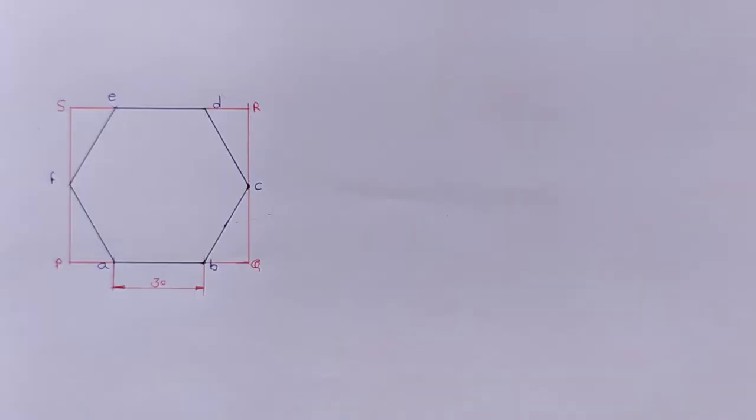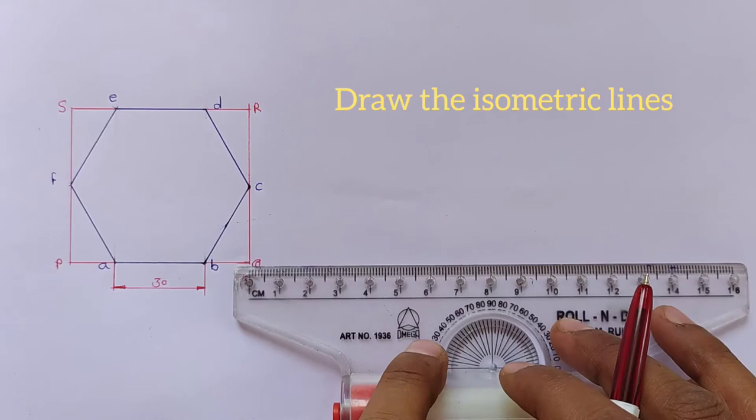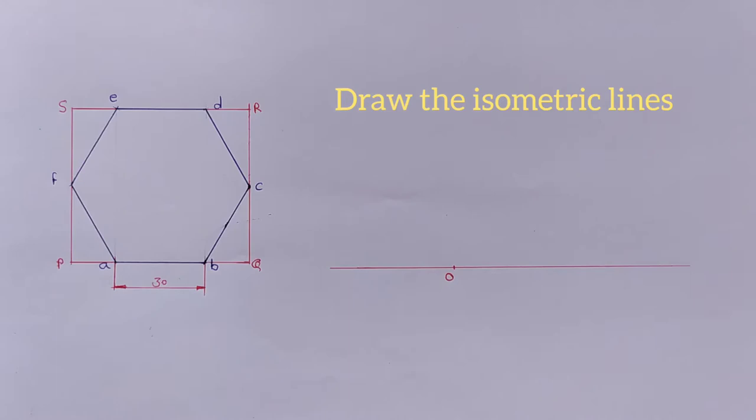Now draw the isometric lines. First we draw the horizontal line, mark origin point O on this line. Then draw a vertical line perpendicular to the horizontal line from point O.